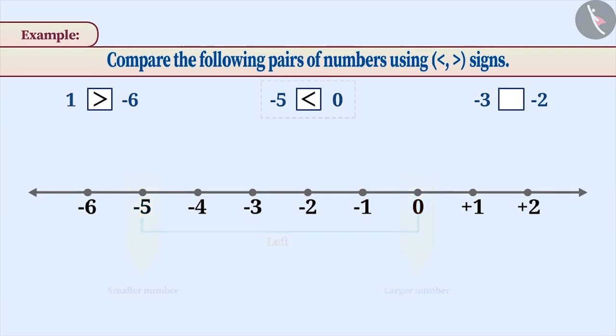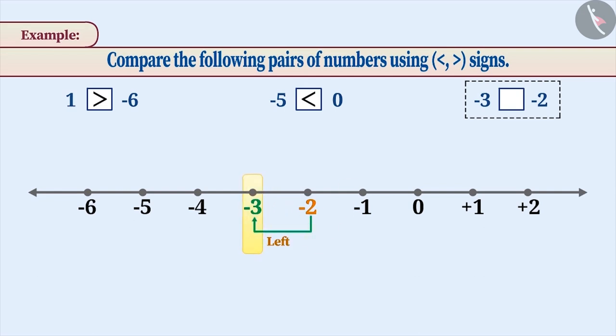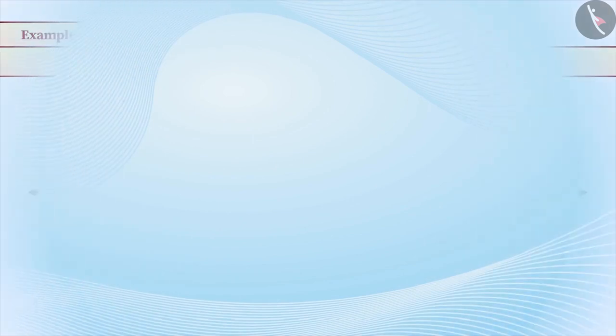Similarly, in order to compare minus 3 and minus 2, mark them on the number line. As you can see, minus 3 is to the left of minus 2. Therefore, minus 3 is smaller than minus 2 or we can say that minus 2 is larger than minus 3.